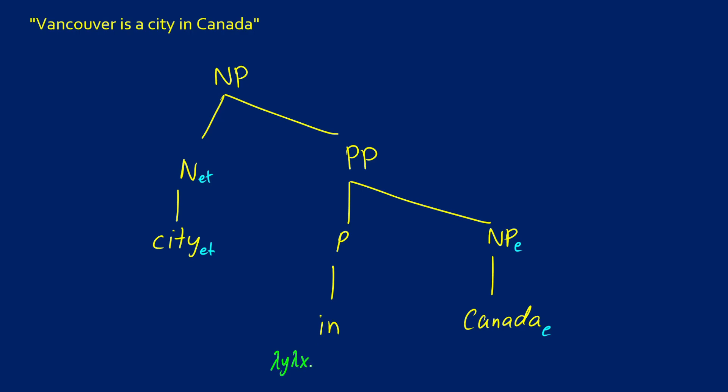This is going to be lambda y lambda x dot x is in y. So this is going to be type EET. So we'll do ET there, that will go all the way up, and then we're going to get an ET as the prepositional phrase. So let's just fill in what we have here.